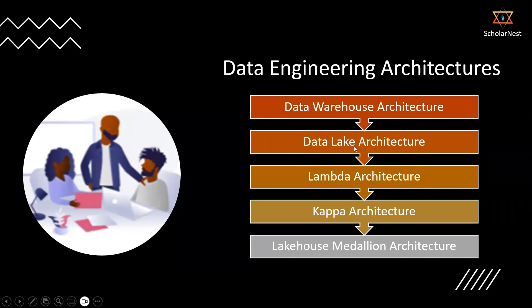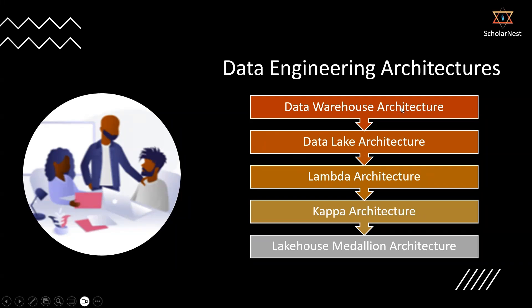But over a period of time, maybe in 2007, 2008, or around 2010, a new architecture came up which we call data lake architecture, which is quite popular and still being used by different projects. Data lake architecture came about because data warehouse had some limitations. To overcome those limitations, the industry came up with this new architecture called data lake architecture.